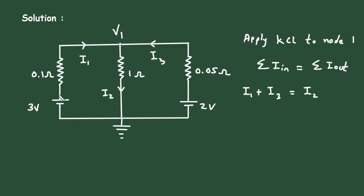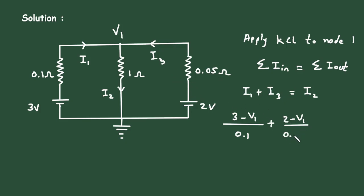Now we will write I1 in voltage form. So it will be (3 minus V1) divided by 0.1, plus I3, which is (2 minus V1) divided by 0.05, equal to I2, which is (V1 minus 0) divided by 1, so we can write it directly as V1.